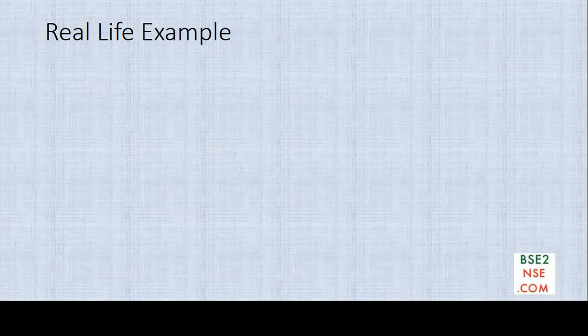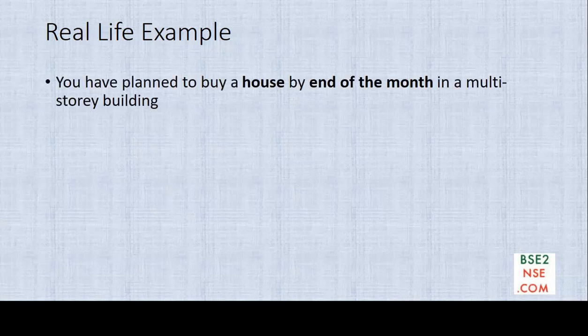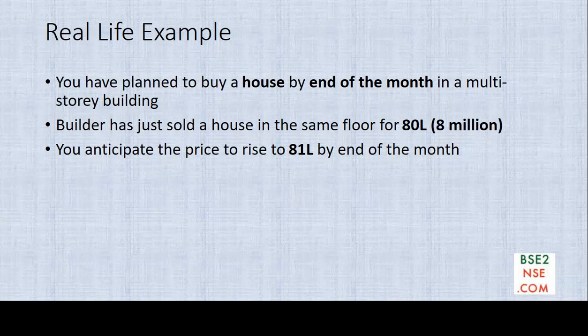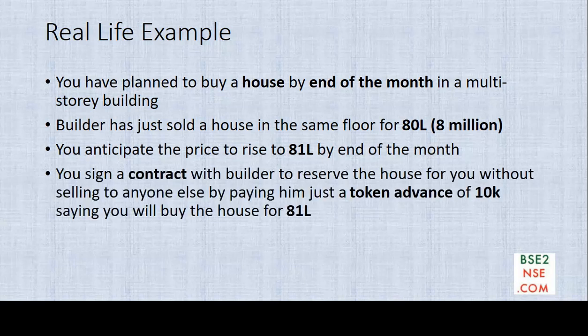Real-life example. Assume you wanted to buy a house by end of this month in a multi-story building. The current market price is 80 lakhs — that is 8 million — which is the rate at which the builder managed to sell another house. You anticipate the price will appreciate to 81 lakhs by end of this month. So you sign a contract with the builder to reserve the house, meaning he should not sell it to anyone else till end of this month. For that you pay him a token advance of 10,000, agreeing to buy the house for 81 lakhs — giving the builder 1 lakh extra over the current market price so that he will agree.